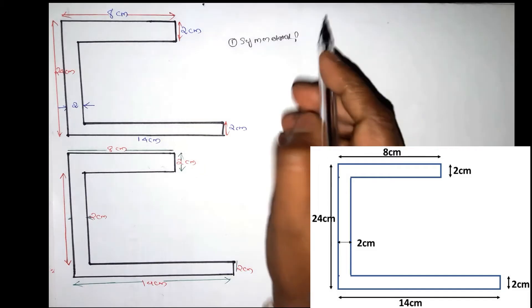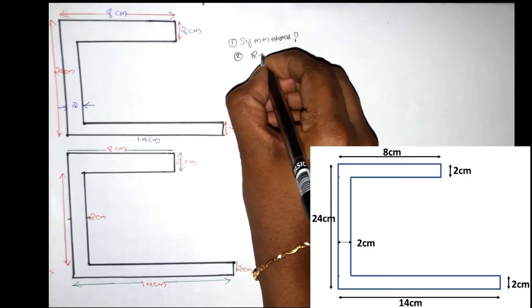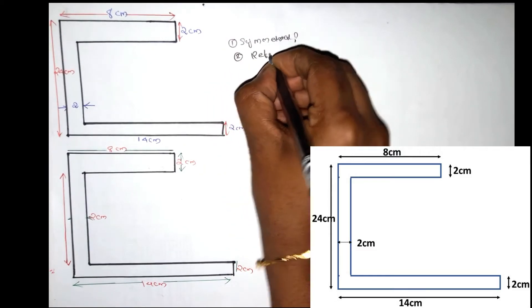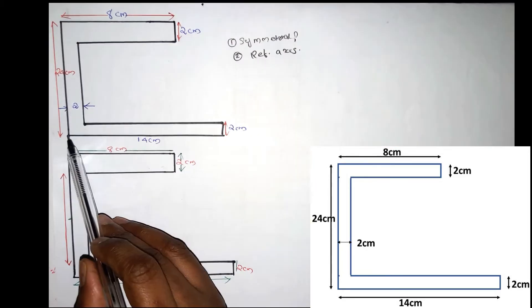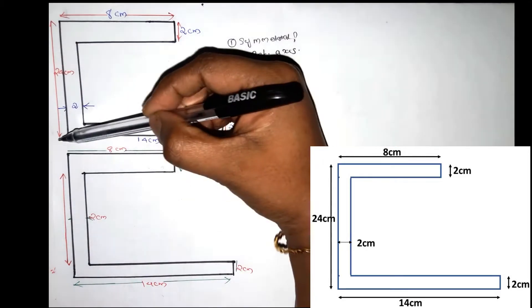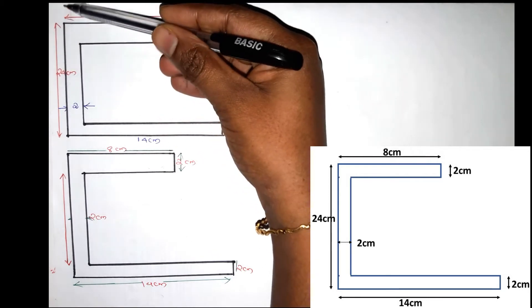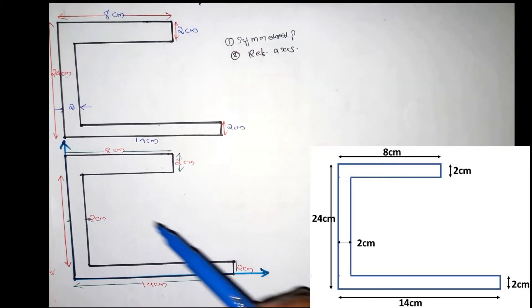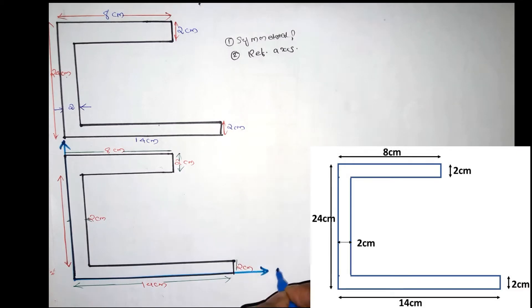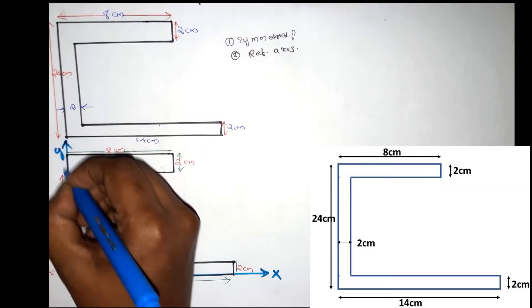The second step is to mark the reference axis. We will mark the x axis and the y axis. This axis is the x axis and this axis is the y axis.